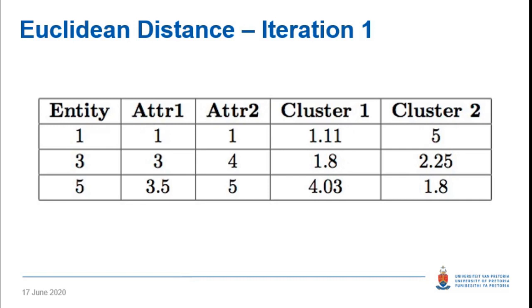Looking at the Euclidean distances: entity one has a distance of 1.11 from the centroid of cluster one (entity two) and 5.0 from cluster two (entity four). Entity three has a distance of 1.8 from cluster one and 2.25 from cluster two. Entity five has a distance of 4.03 from cluster one and 1.8 from cluster two. So entities one and three are closer to cluster one, and entity five is closer to cluster two, giving us cluster two containing entities four and five.